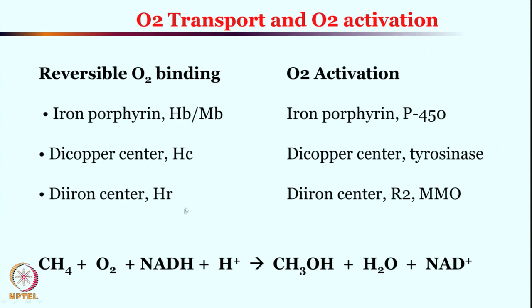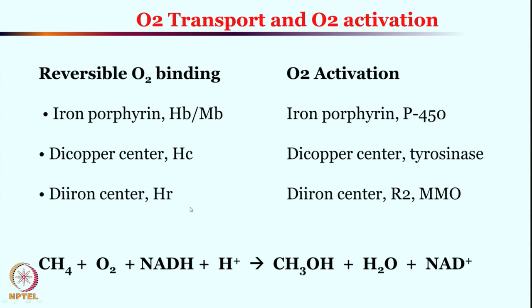For hemerythrin, two iron centers are involved in oxygen binding, and a hydroperoxo species is formed — most interestingly at a non-heme di-iron center. A similar non-heme di-iron center is found in methane monooxygenase, with structural similarities. These are all dinuclear di-iron active sites with unsymmetrical iron centers. In hemerythrin, binding is reversible, but in methane monooxygenase the di-iron center converts oxygen into a useful entity by converting methane to methanol.